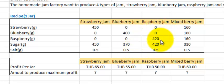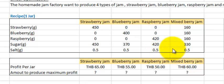For the raspberry jam, it takes 420 grams of raspberry, 420 grams of sugar, and 0.5 grams of salt. For the mixed berry jam...